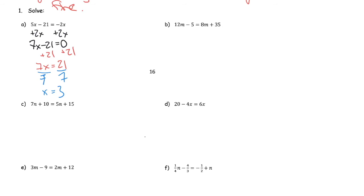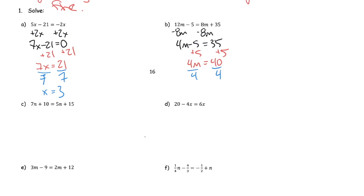For the next one, same sort of thing. The first step is to bring the 8m over to the other side. That gives 4m minus 5 equals 35. Once the m terms are together with just one term containing m, I add 5 to both sides to get 4m equals 40, then divide both sides by 4 to get m equals 10.